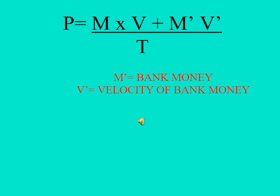The final equation of Fisher's approach is: P = (MV + M'V') / T, where M' is the bank money or credit money in circulation, and V' is the velocity of bank money or credit money.